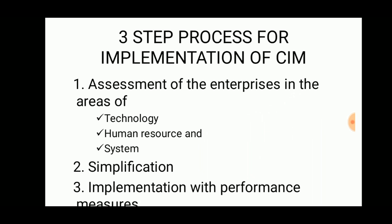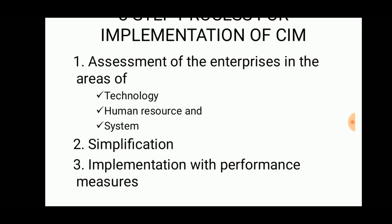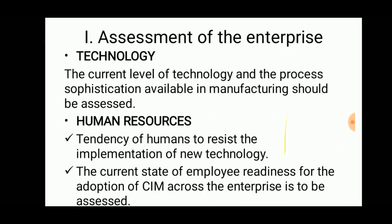The steps for implementation of CIM are: first, assessment — gathering information from the enterprise regarding technology, human resources, and systems to choose an optimum decision. Then simplification, followed by implementation with performance measures, and finally assessment of the enterprise.